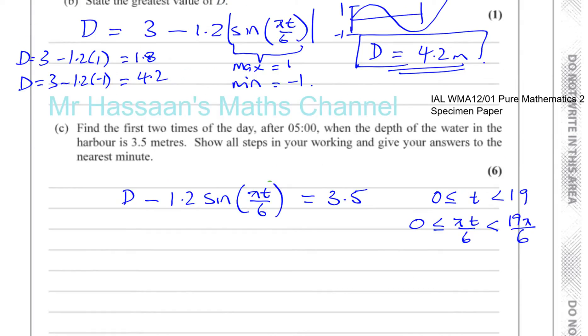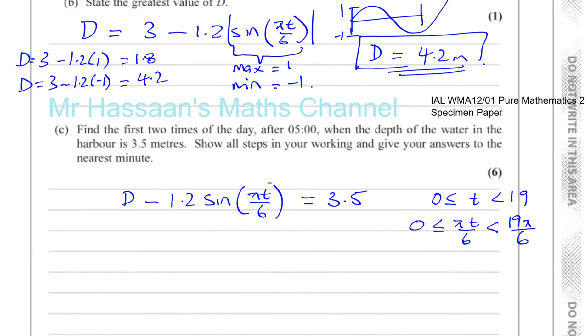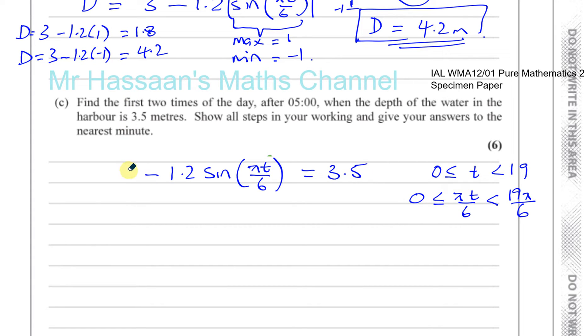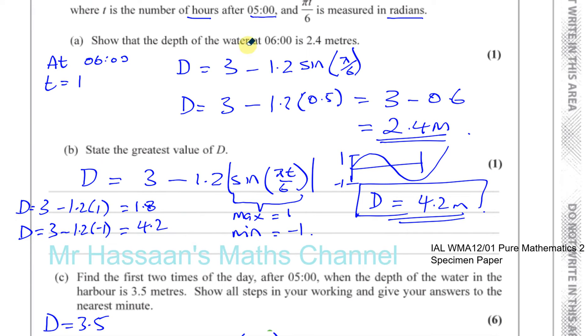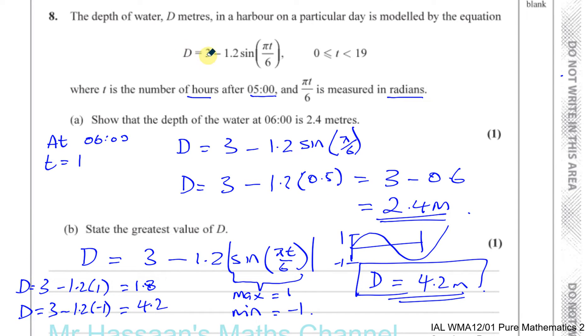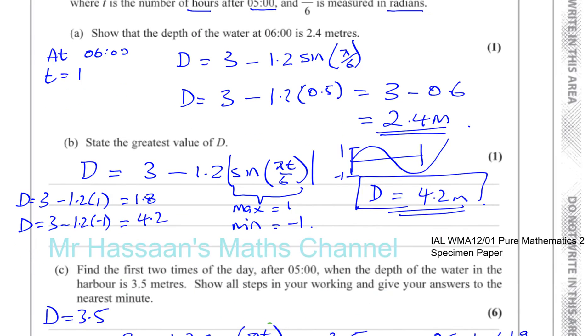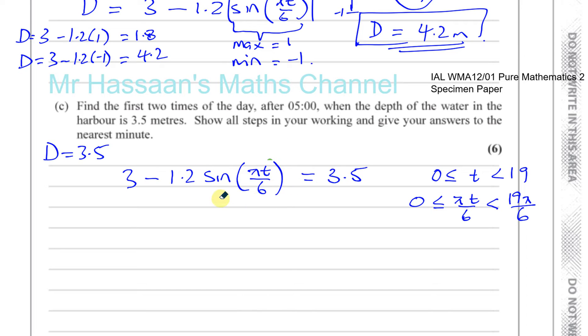So how to solve this equation? Wait, what am I doing? D equals 3 minus, not D minus, that's 3 minus. It's 3 minus 1.2 sine pi t over 6 equals D. So that D is 3.5. When D equals 3.5, then you get 3 minus 1.2 sine pi t over 6 equals 3.5. So we've got to solve this equation.